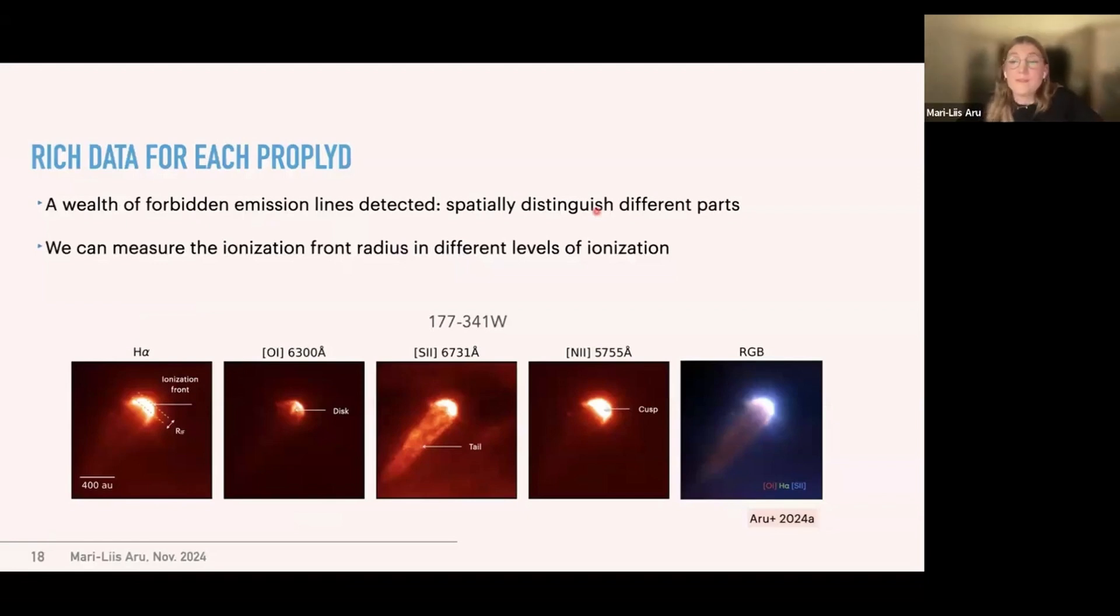Now, with this MUSE data, we have a wealth of forbidden emission lines that have been detected. And this is particularly important because we can spatially distinguish the different parts or components of each system. So in here, you can see, for example, in the first panel in H-alpha, the ionization front. Then there is the disk visible in here, but still some emission also from the rest of the proplyd in Oxygen-I 6300. Then there is the tail, the elongated tail visible in the sulfur line, the cusp or the brightest part of the system, and then the RGB view. We can measure this ionization front radius, which is a very useful parameter in different levels of ionization, thanks to these emission lines.